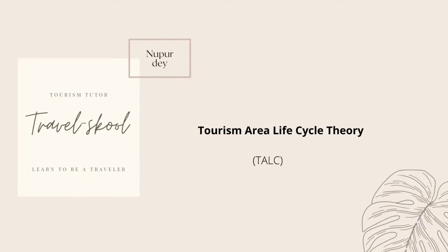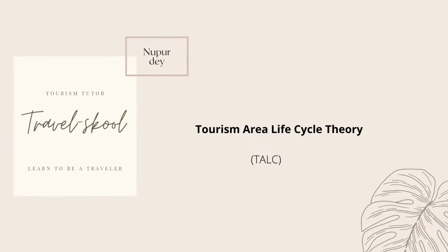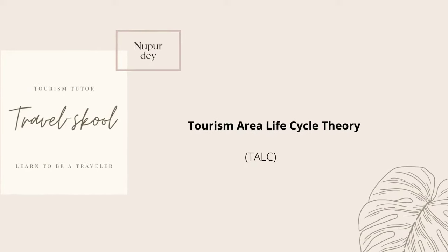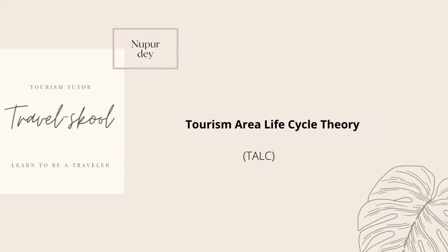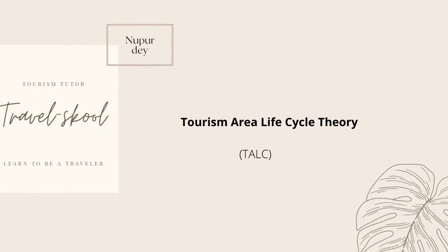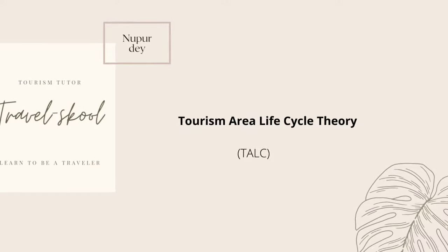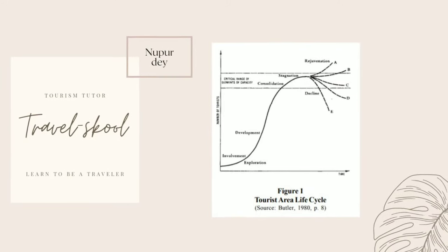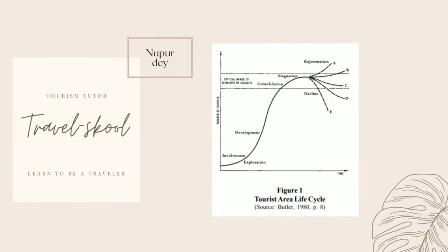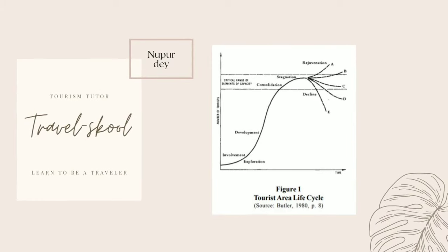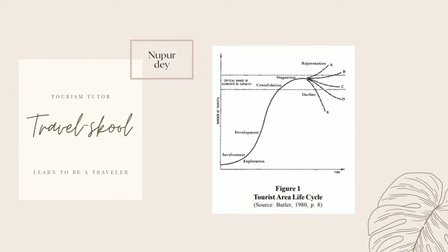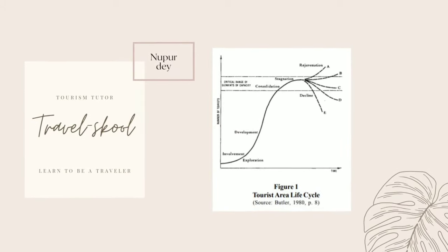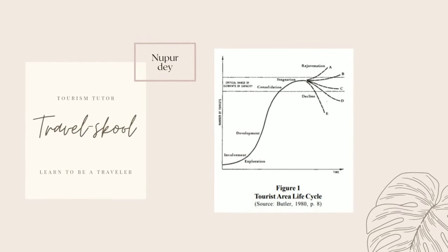The first tourism theory is called TALC — the Tourism Area Life Cycle theory. This theory was given by Butler, and as you can see in this image, it has two axes: one representing the number of visitors and the other representing time.